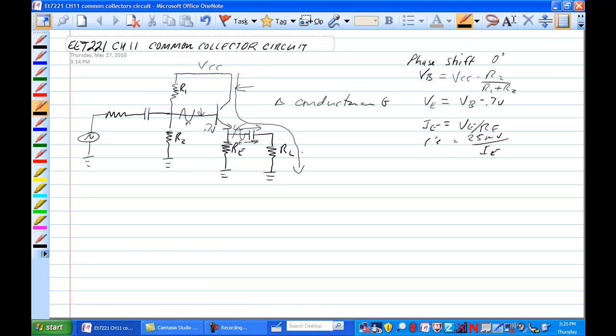All right, we need to look at something called RE. And don't mistake that for R prime E, which includes this part of the circuit. So RE, what the AC sees down here in the emitter, is equal to RE in parallel with RL.